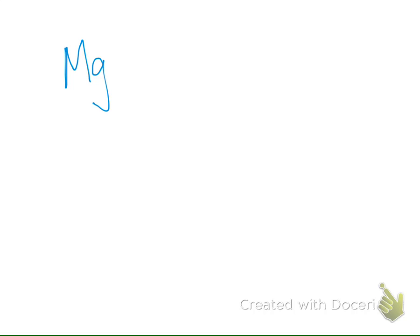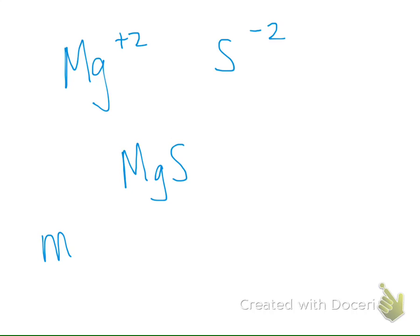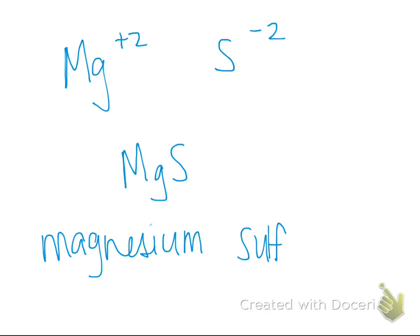Let's look at magnesium and sulfide, which is the ion version of sulfur. What are the charges? Magnesium is plus two, and sulfur is minus two. Do anything need to be done? No — we combine it and write it MgS. If I want to name this molecule: the cation does not change its name, so it's magnesium sulfide. That's it — that's as tough as it gets.